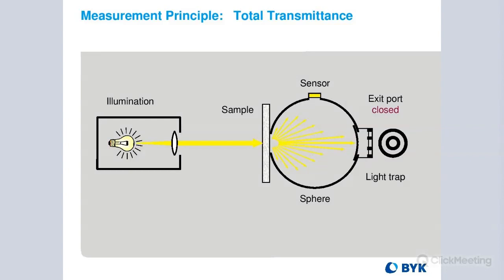The sphere is a white-coated sphere, made so that when the light hits it — whether it's direct or diffuse transmittance — it all bounces around the inside of this white-coated sphere and is captured by the sensor. This is how total transmittance is measured, given as a percentage relative to the reading in open air. Open air is measured at 100%. If your sample measures at 70%, that means that 70% of the light is getting through as was getting through with open air.